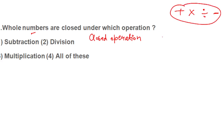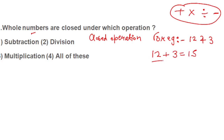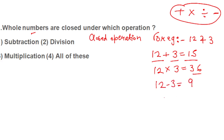A closed operation is when you perform these four operations on members of a set and the result comes from that same set. For example, take two whole numbers 12 and 3. 12 plus 3 is 15 — all whole numbers, so addition is justified. But 3 minus 12 gives minus 9, which is not a whole number — so subtraction is not justified here.